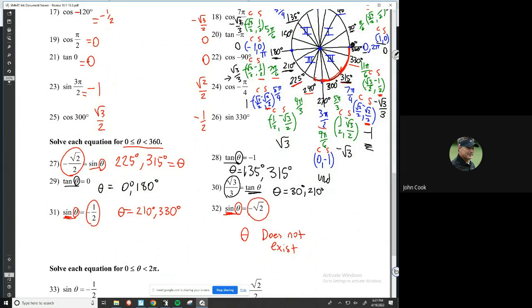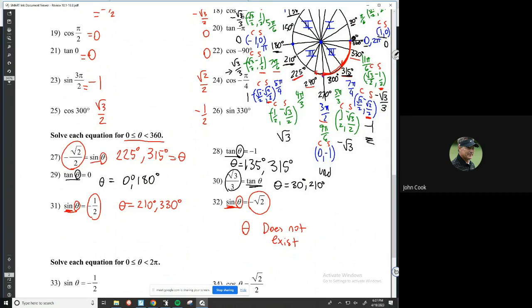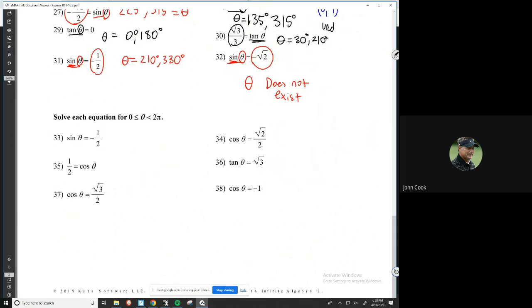So that's it for this video, 27 through 32. I just used the unit circle, and it looks like the rest of these I'm going to do the exact same thing, but with radians instead. But I'll save that for another video. All right, see you then. Bye-bye.